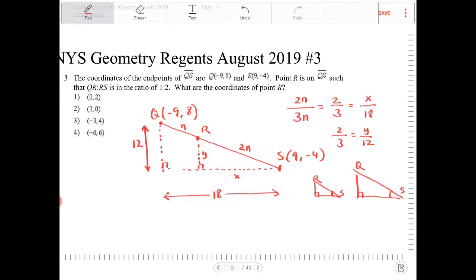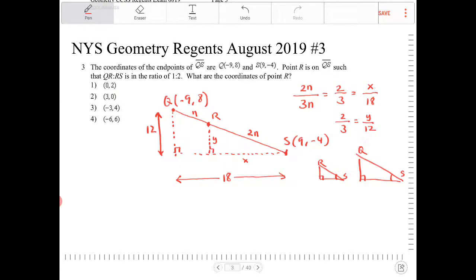So anyway, getting back to the problem, I need to figure out what X and Y is. So I have 2 thirds is equal to X over 18, which I wrote over here on the upper right-hand corner there. I'm now going to solve for X. So I'm going to multiply both sides by 18. So I'm going to get X is equal to 18 times 2 thirds. And what is that? That's actually 12.